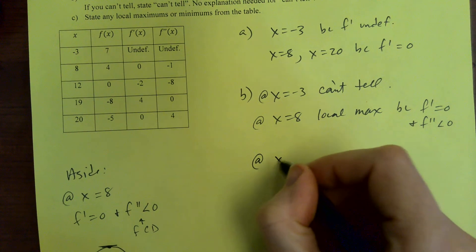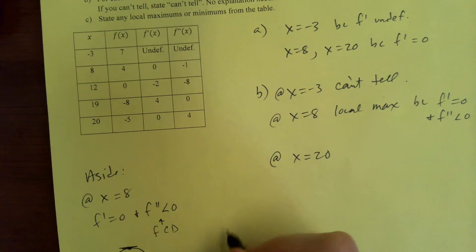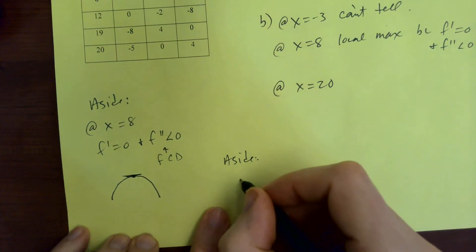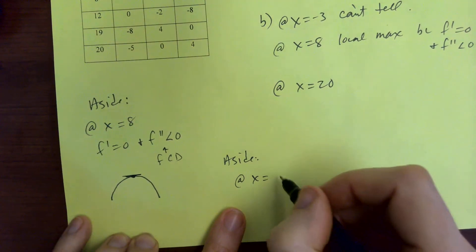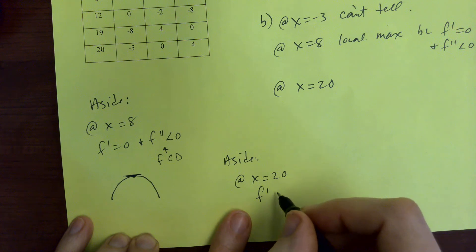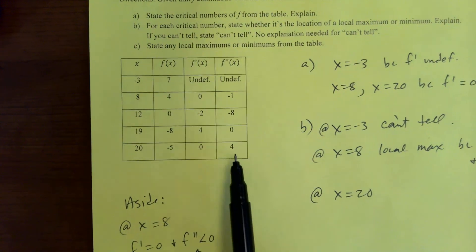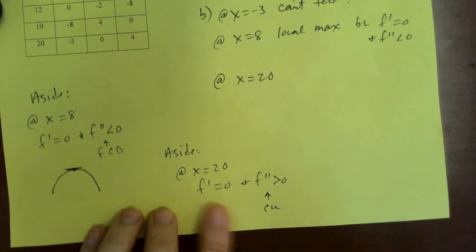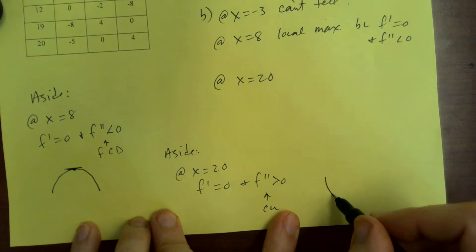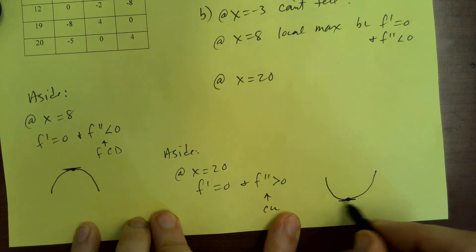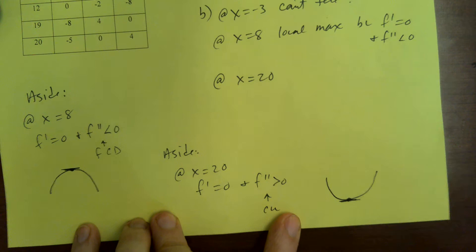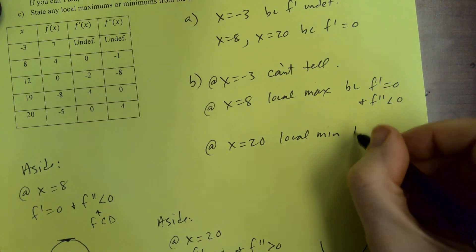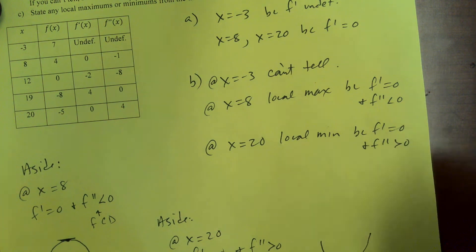At X equals 20: F prime is zero and F double prime is four, so F double prime is positive, which means concave up. Concave up would be part of an upward parabola — you've got this smooth local min. So local min at X equals 20, because F prime is equal to zero and F double prime is greater than zero.